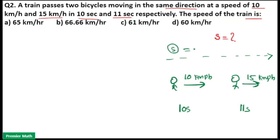I will take the speed of the train as S. Here, the distance covered while overtaking the first cyclist and the distance covered while overtaking the second cyclist are both the same. So the distance is the same, and I will equalize the first case and the second case.